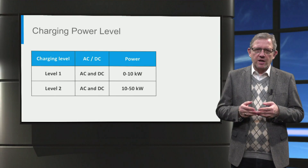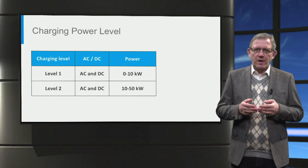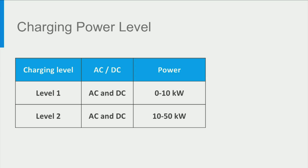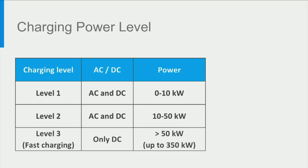With AC and DC charging, the charging power can be split into three levels: Level 1 up to Level 3. Generally, Level 1 refers to charging power up to 10 kW, while Level 2 refers to charging power up to 50 kW. Both AC and DC charging can provide Level 2 charging power. Beyond 50 kW, only DC charging using an off-board charger is used, providing charging power as high as 350 kW. Level 3 charging is often called fast charging.